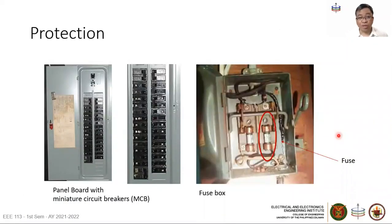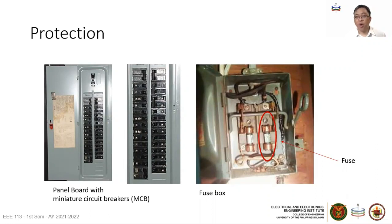The next feature is protection. We have protection devices in our transmission and distribution networks, and it is easier to explain starting with house wiring. Have you ever stuck a metal in an electrical outlet and caused a short circuit, or plugged in a faulty appliance causing a short circuit? Our house wiring should be equipped with protection devices such as miniature circuit breakers in a panel board or fuses in a fuse box.